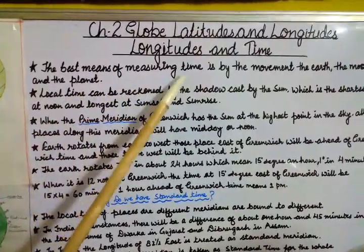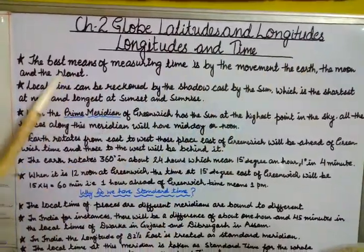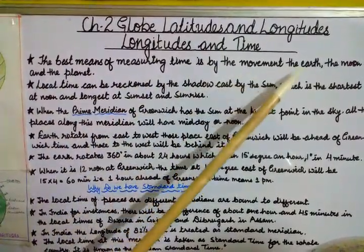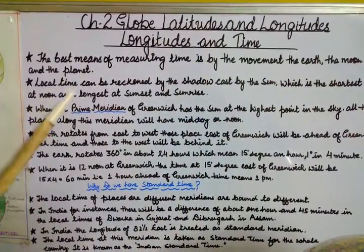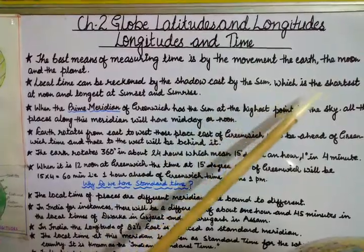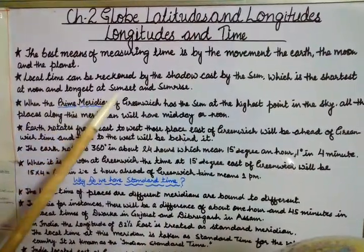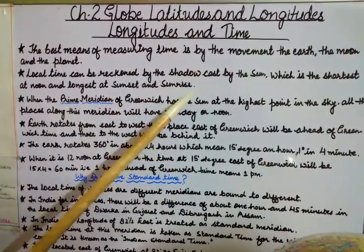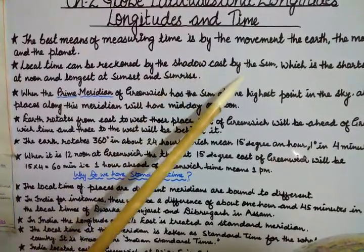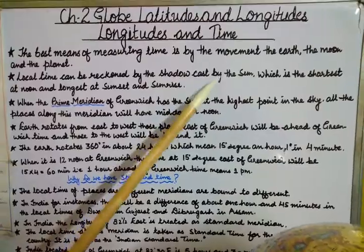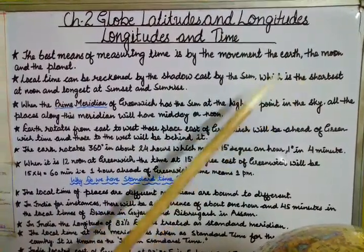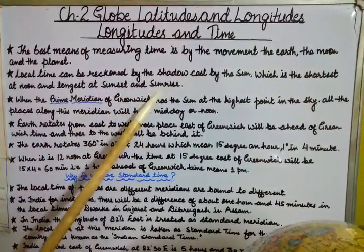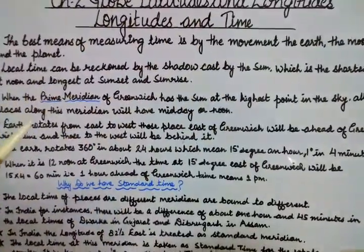The best means of measuring time is by the movement of the earth, the moon, and the planets. When we were not having any watches or clocks, people used to measure time by the shadow cast by the sun, which is the shortest at noon and the longest at sunset and sunrise.